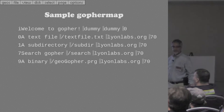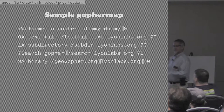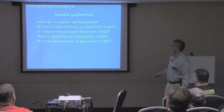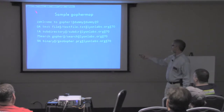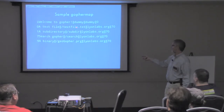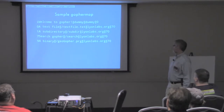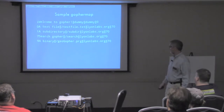The host and port are important because just like with the World Wide Web, you can be on a Gopher server, click on a link, and it'll take you somewhere completely different on a different machine. The fields are delimited by tab characters — I replaced them with the double pipe symbol to make it easier to read. Some of the types: 0 for text files, 1 for subdirectory, 7 for search, and 9 for binary.